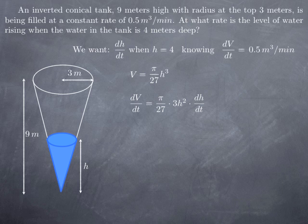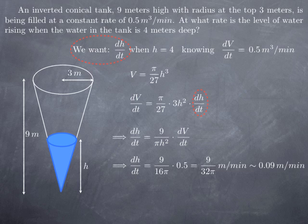3 over 27 is 1 ninth and we want dh over dt so we solve for that particular rate. We obtain that dh over dt is 9 over π h squared multiplied by the rate of change of V. When h is 4 we can plug in h equal 4 in this formula and dV over dt is a constant and is 0.5. If we plug things in we obtain 9 over 32π in meters per minute which is approximately 0.09 meters per minute.